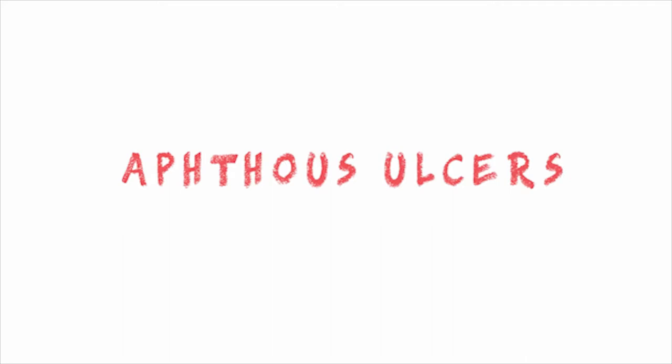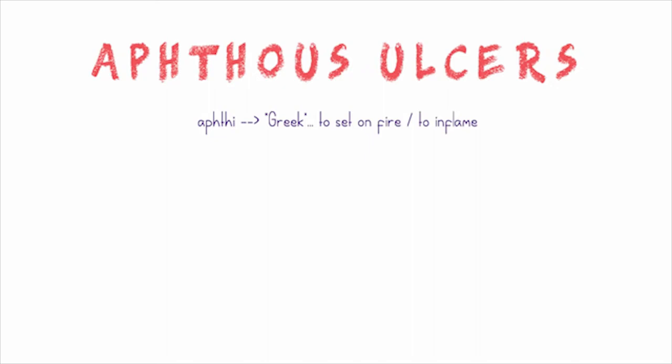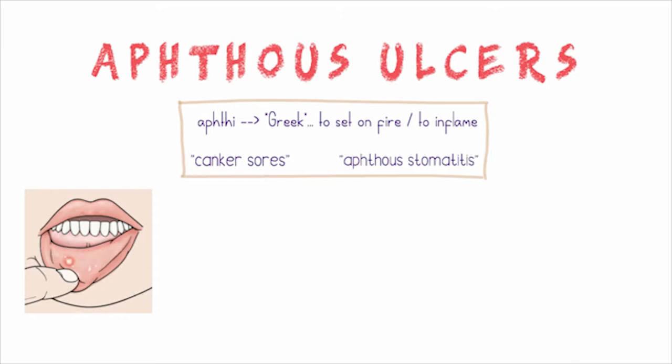Aphthous ulcers — the term 'aphthous' is derived from a Greek word 'aphthai' which means to set on fire or to inflame. It is also commonly referred to as canker sores or aphthous stomatitis. Stomatitis stands for inflammation of the mucous membrane of the mouth, and oral ulceration is a breach in the continuity of the oral epithelium.